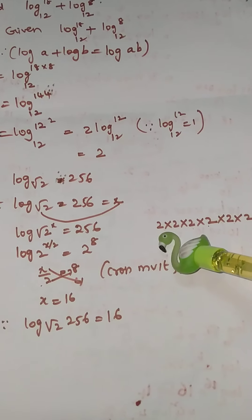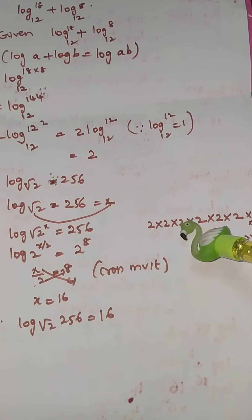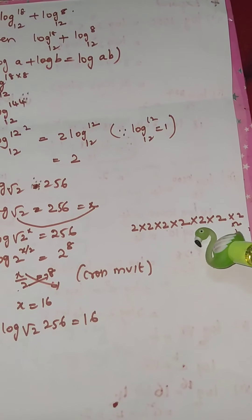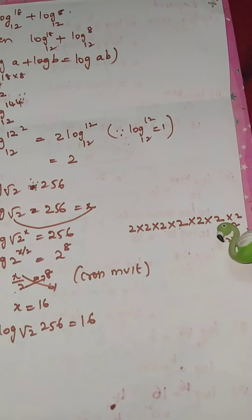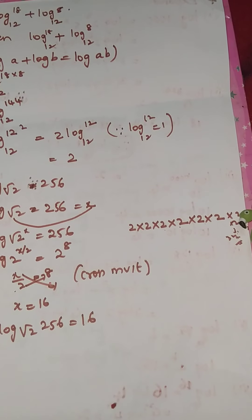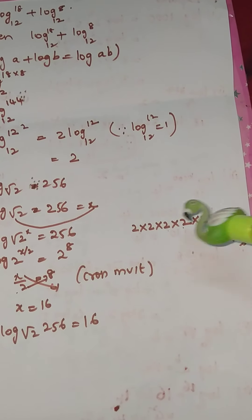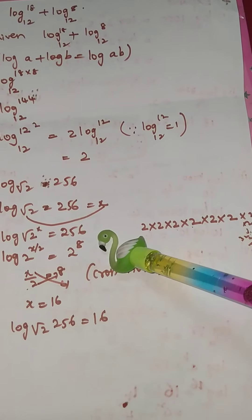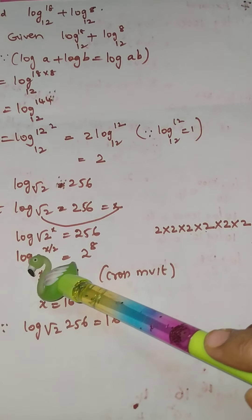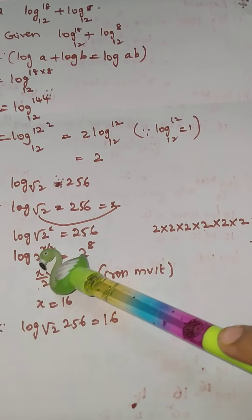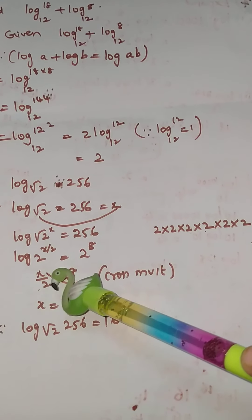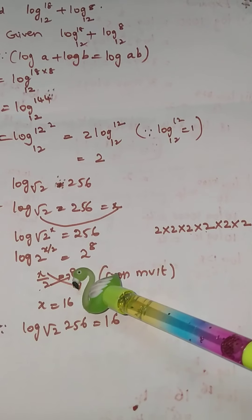We write 256 as 2⁸ — since 2×2=4, 4×2=8, 8×2=16, 16×2=32, 32×2=64, 64×2=128, 128×2=256. Since the bases are the same, we equate powers: x/2 = 8.